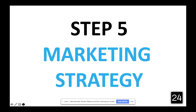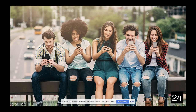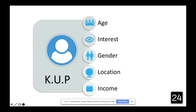Now let's discuss step five: Marketing Strategy. Marketing strategy is broken into three segments. First is your Key User Profile, or KUP, which covers age, interest, gender, location, and income. You want to break this down and be specific. You don't want to say 'my app is for everybody' — technically it could be, but there's going to be a key user audience. Break it down by an age range, like 18 to 30 or 40 to 75, whatever it is.